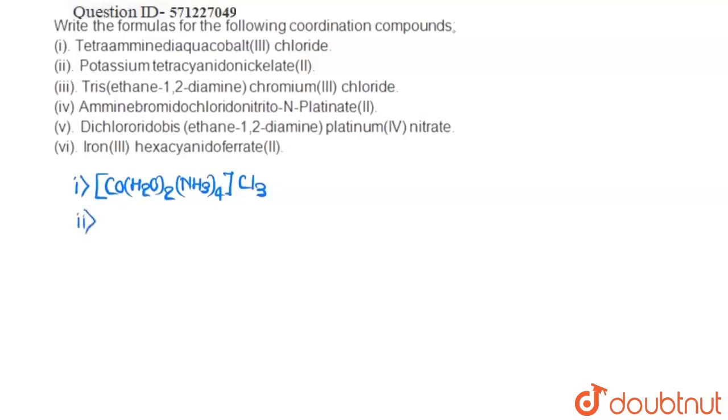Second compound is potassium tetracyanidonickelate(2). That means 4 cyanide ligands will be there. So, the formula will be K2[Ni(CN)4] which makes the oxidation number of the metal atom as +2.